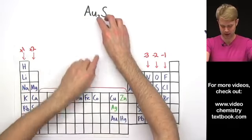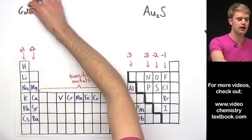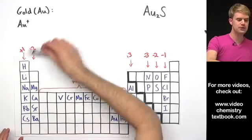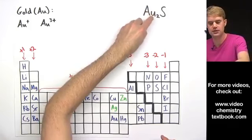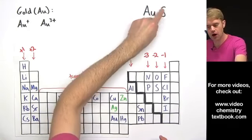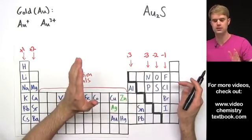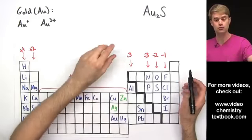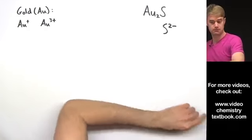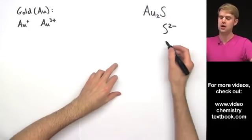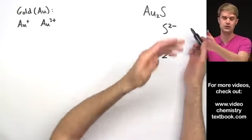Next example: Au₂S. Au is gold, and gold is able to make two different types of ions: Au⁺ and Au³⁺. We've got to figure out what charge this Au has. We'll focus in on S. S is in the column of the periodic table that means it always has a charge of 2-. So here we have S²⁻, and there's only one S, so our total negative charge in the compound is 2-.